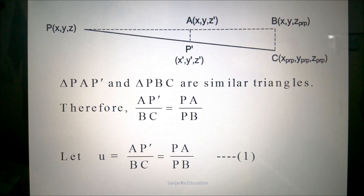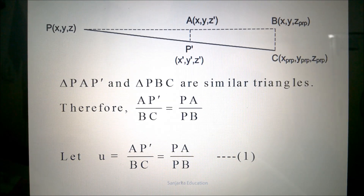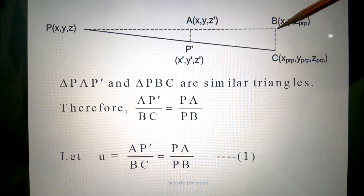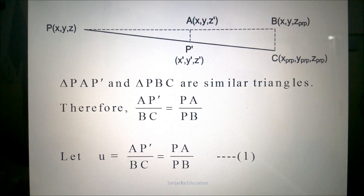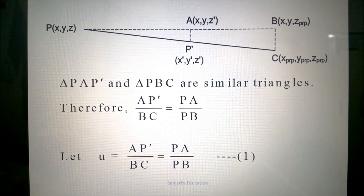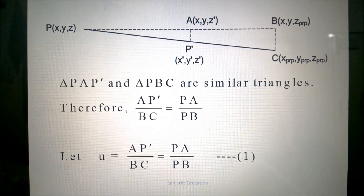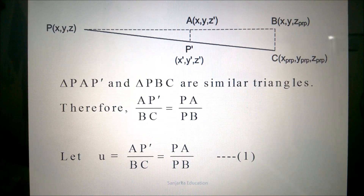P dash is an arbitrary point corresponding to the perspective projections, and therefore the location of P dash may be anywhere on the line between P and C. Another important point: in the dotted lines from P to B, this corresponds to the viewing axis, which is the Z axis. Therefore, viewing is taking place along the Z axis, and perpendicular to the Z axis is AP dash, which corresponds to the X axis. The Y axis is perpendicular to both the Z axis and X axis and cannot be shown on a two-dimensional screen, so it is not shown here.